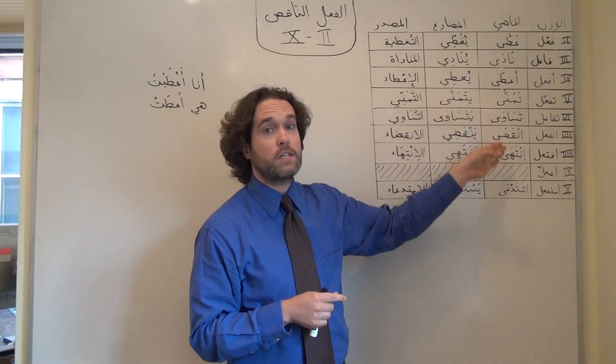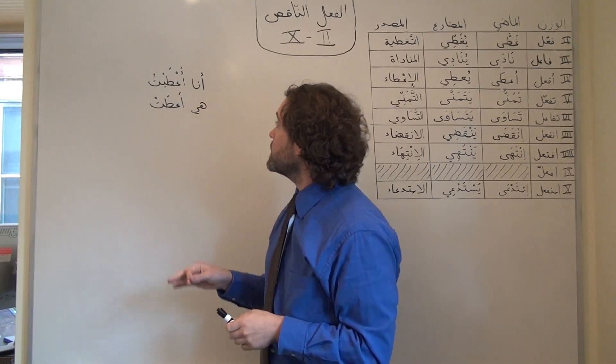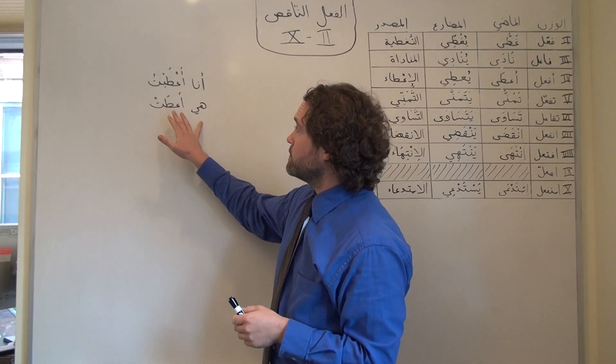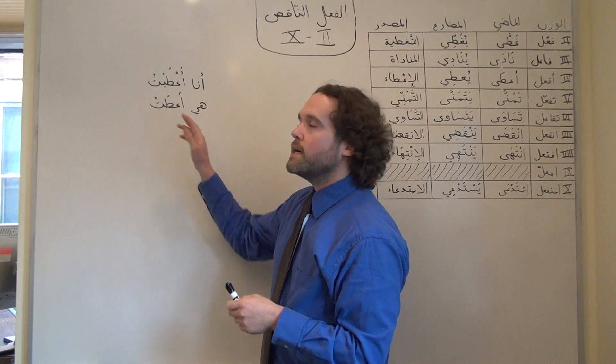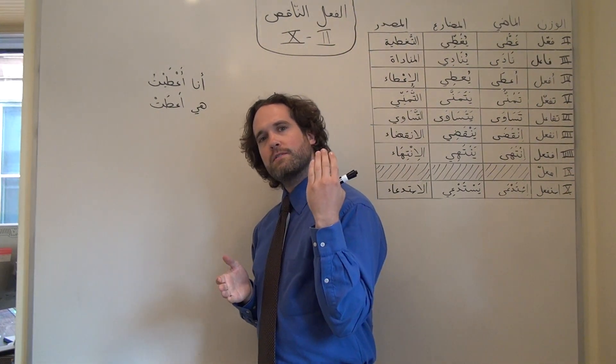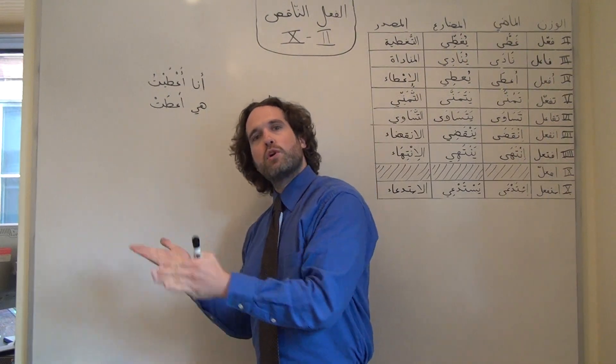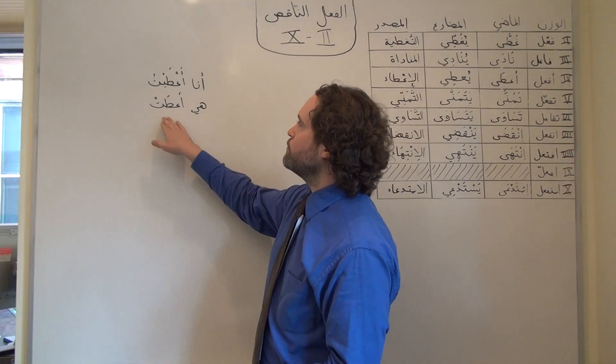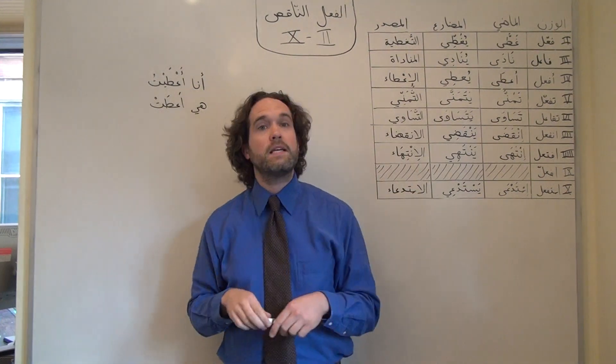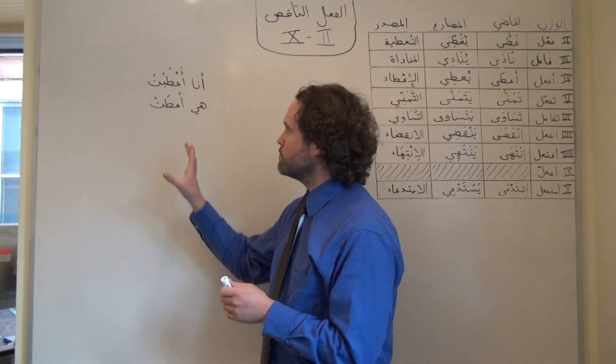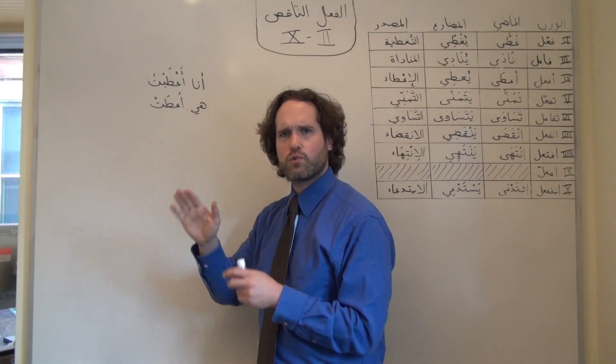That's true for every single past tense verb. And just like Form 1 فعل ناقص, the third person feminine singular conjugation هي is going to drop that vowel entirely. So she gave would be هي أعطت. Or she hoped would be هي تمنت. We would drop that يا, or that ألف مكسورة, and we wouldn't see it at all.